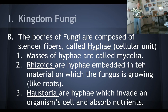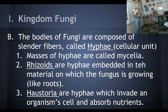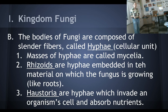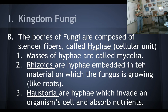Rhizoids are hyphae embedded into the material on which the fungus is growing. For example, if a squirrel dies and falls on the ground, fungal spores land on it, and now we have mushrooms on the squirrel. The parts of the fungus that go into the body of the dead squirrel are called rhizoids. It could be a dead log, your skin if you have athlete's foot, or the bark of a living tree. The anchoring part of the fungus is called a rhizoid — it's like a root, but it's not a root.